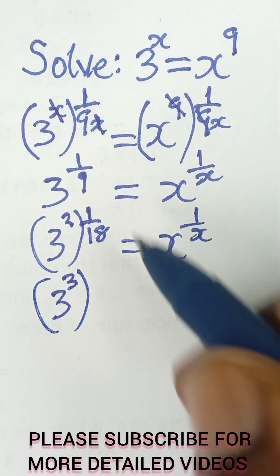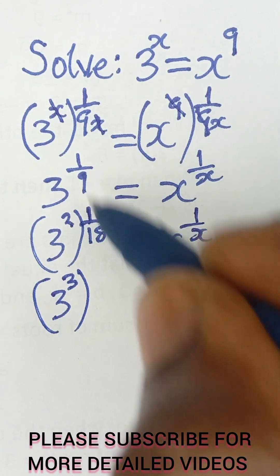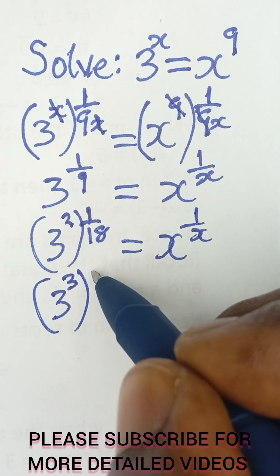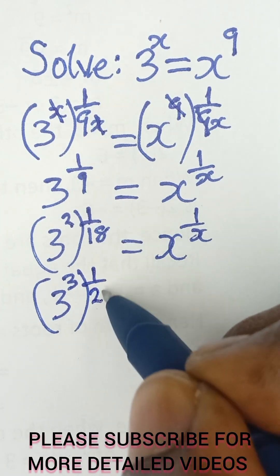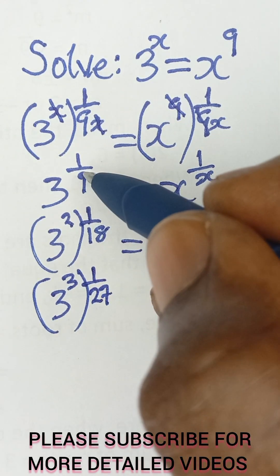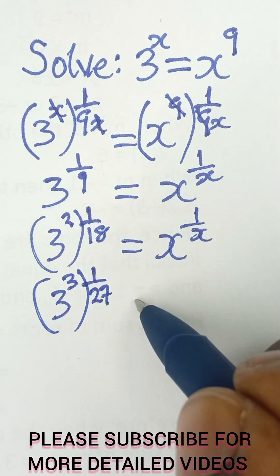And then raised to the power, after 9, 18, the next one is 27, 1 over 27. So you keep going on 9, 18, 27, 36, and so on.